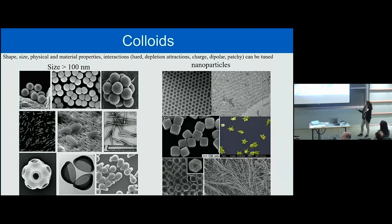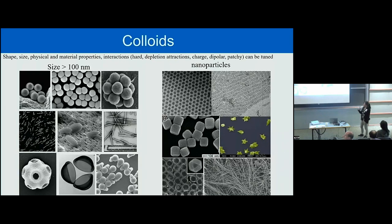Over the past two decades we have seen big strides in the synthesis of all kinds of nanoparticles and colloidal particles. They can change in sizes from the nanometer range to the micrometer range. I'm actually coming from the micrometer range where colloid science is well understood, but we are now moving also to smaller particles. These particles can be made from any material and with many different shapes, and one can even tune the interactions such that the van der Waals interactions are completely masked, so only the shape of these particles matters.